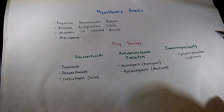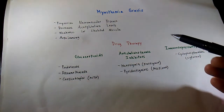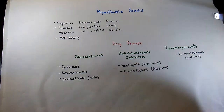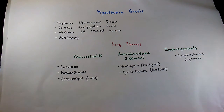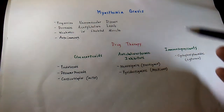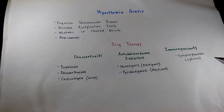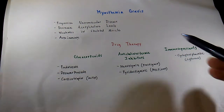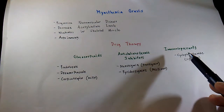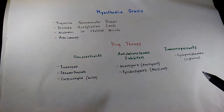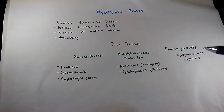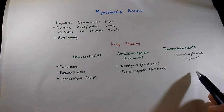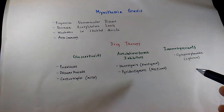Immunosuppressants are actually the main treatment for myasthenia gravis, because what they do is basically suppress or reduce the strength of the body's immune system, since the person's immune system is the one creating the antibodies that are eventually causing myasthenia gravis. What we have to take note of for our patients when giving immunosuppressants is that there would be a reduction of the immune system, which can cause a reduction of resistance to infection. So our patient would be prone to infection due to the suppressed immune system.